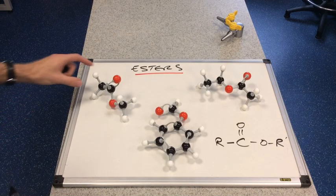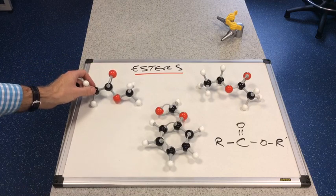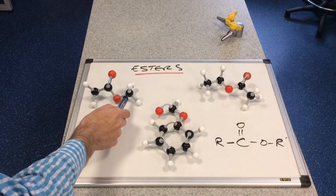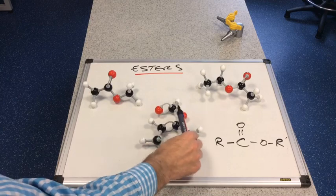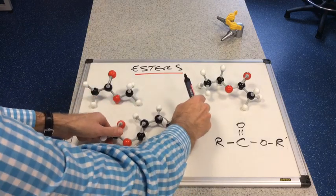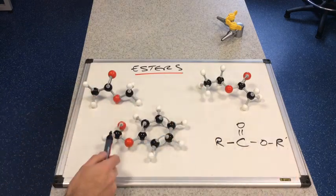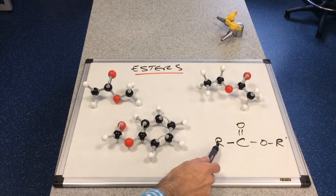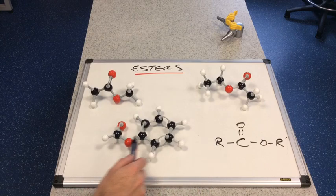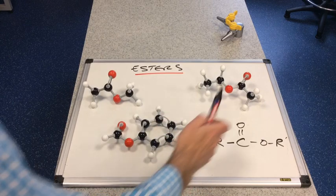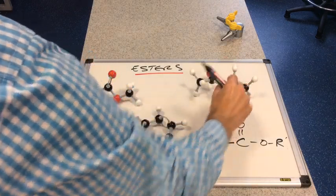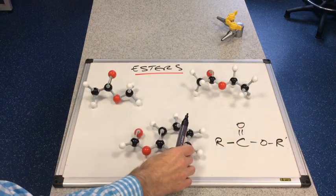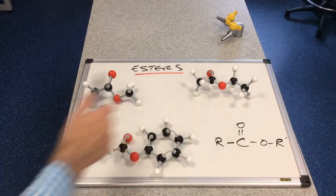In the three molecular model kits on the board we can see the functional group: R group, C double bond O, single bond O, R group. I'll just orientate the models so they mirror each other — you can see the H on the R group in each case. All three models show the same ester functional group pattern.